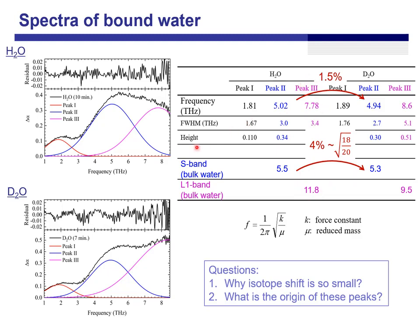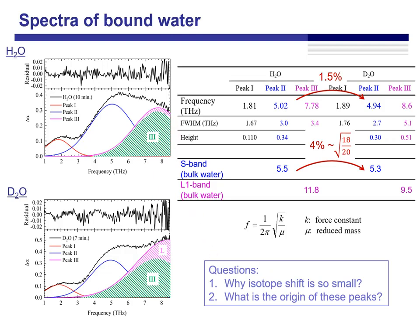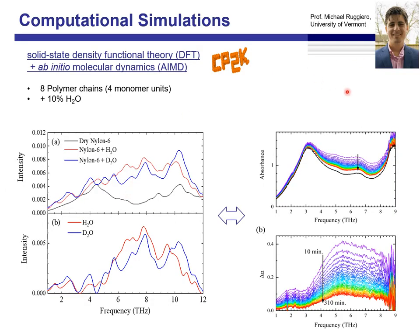About P3, maybe this is not just a libration band — the libration band is overlapping, but mainly there is another band. The question is: why is the isotope shift so small, and what is the origin of these peaks? We cannot answer this just by experiment; we need computational simulations. DFT calculation does not help — we need ab initio MD calculation. So I asked Mike to perform an ab initio calculation. He kindly performed a very nice simulation, which is solid-state density functional theory combined with ab initio molecular dynamics. He built a model with 8 polymer chains containing 10% water.